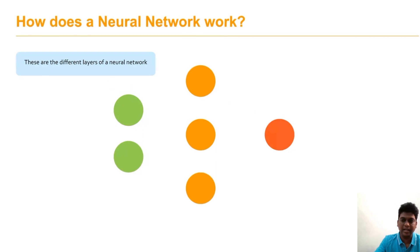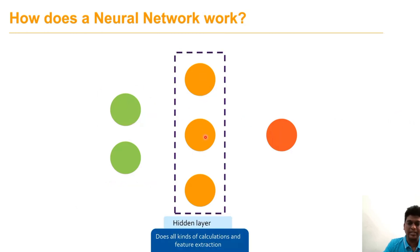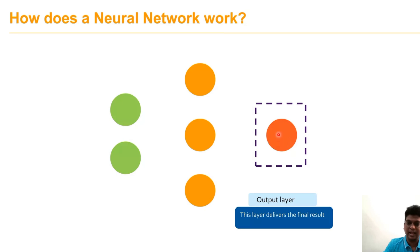There are different layers. The first is the input layer, which picks up input signals and passes them to the next layer. The orange-colored circles represent the hidden layer, which performs all the calculations needed to extract features and perform classifications. Finally, the red-colored circle denotes the output layer, which provides the final predicted output.